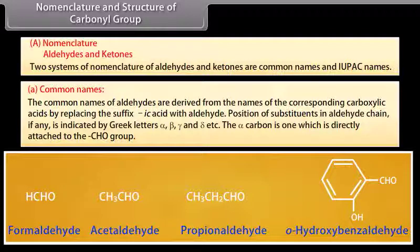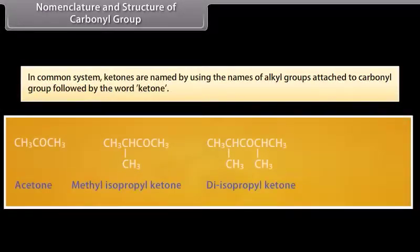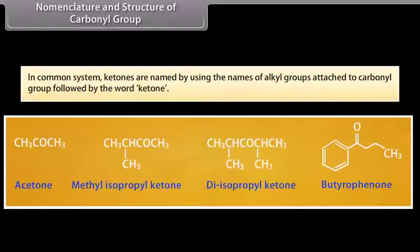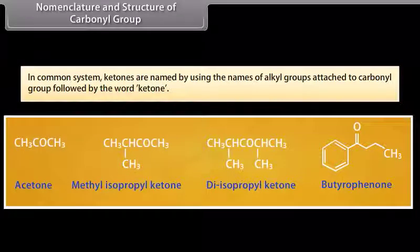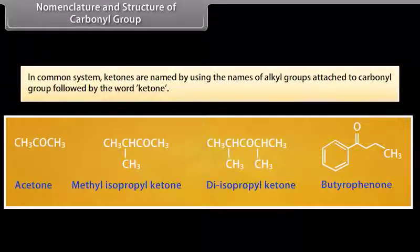The alpha carbon is the one which is directly attached to the aldehyde group. In the common system, ketones are named by using the names of alkyl groups attached to the carbonyl group followed by the word 'ketone'.